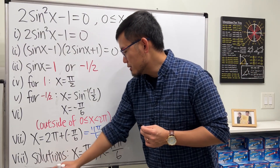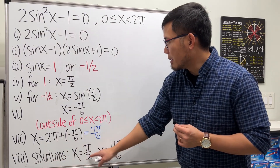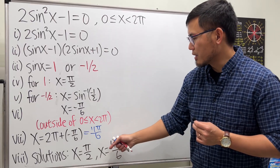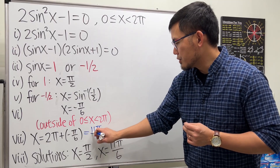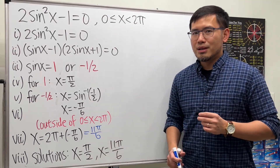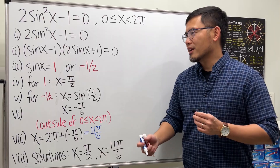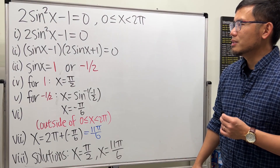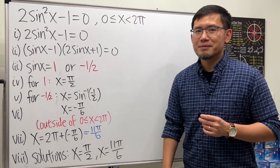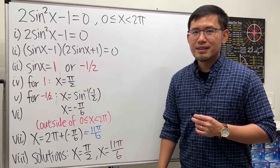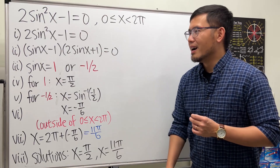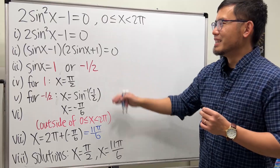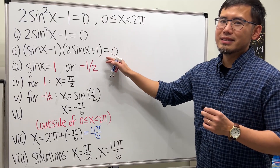The final step says the solutions are π over 2 and 11π over 6. Go ahead and pause the video and think: do you agree with all this, or where is the mistake? The answer is Step 2 — it's incorrect.